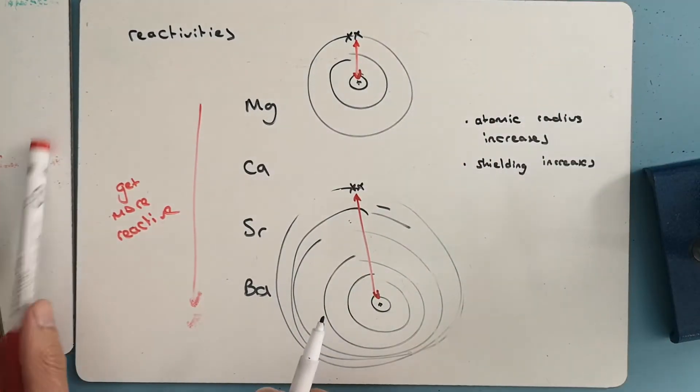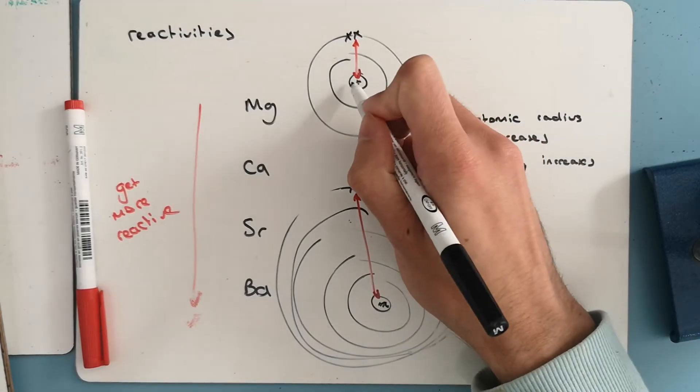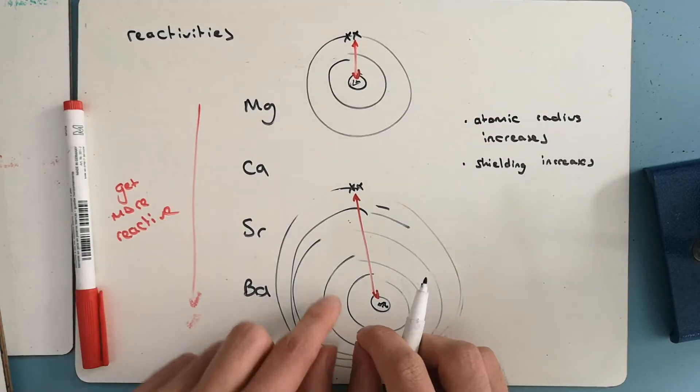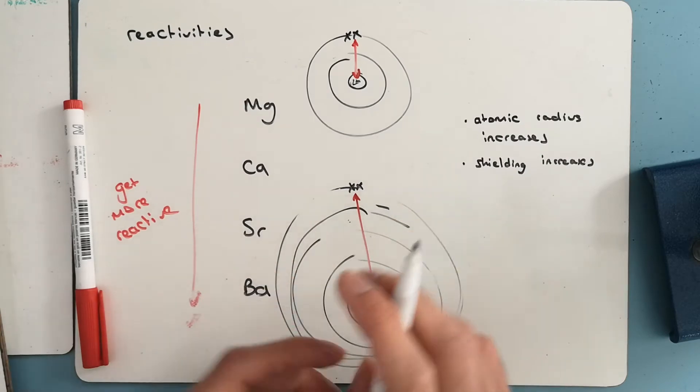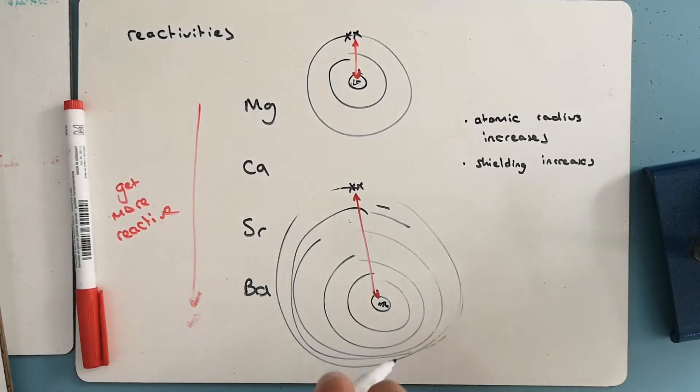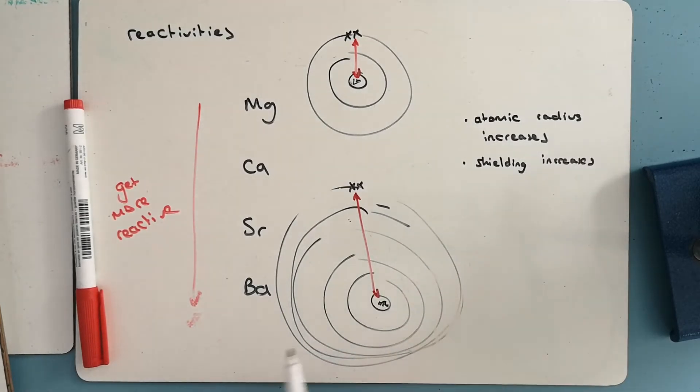So despite barium having more electrons and protons as well, that's 56 positives at the start here, compared to 12 protons at the start of here. So if we just looked at the proton number, we'd think that barium would probably hold on to its electrons more. But because atomic radius and shielding increase, this outweighs the fact that it's got more protons.